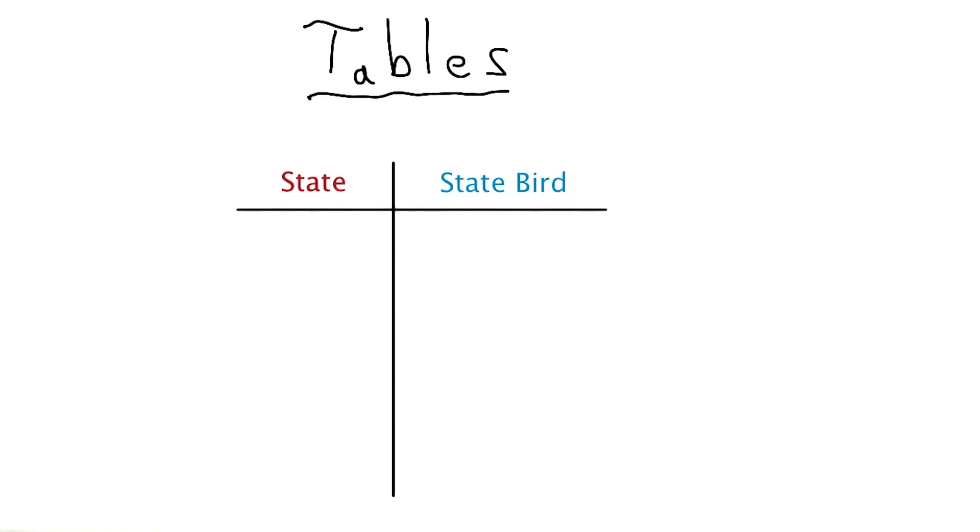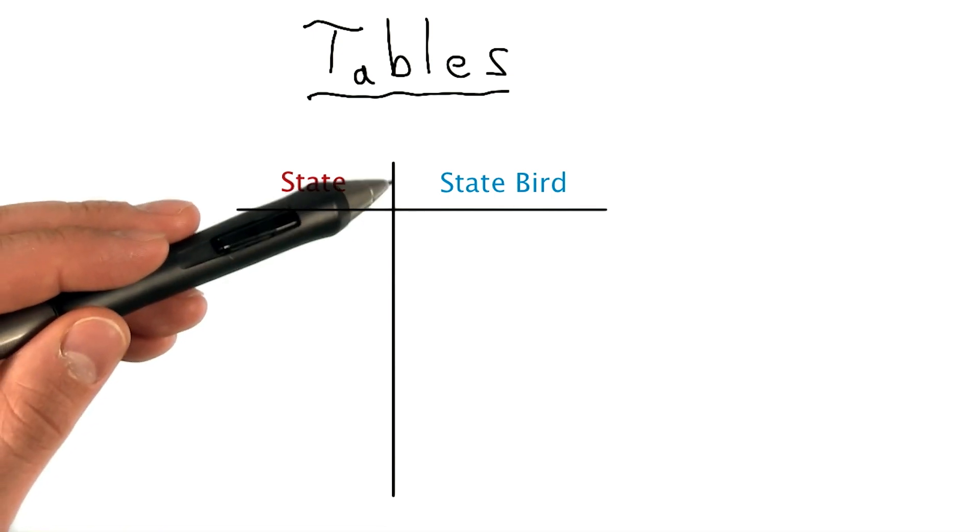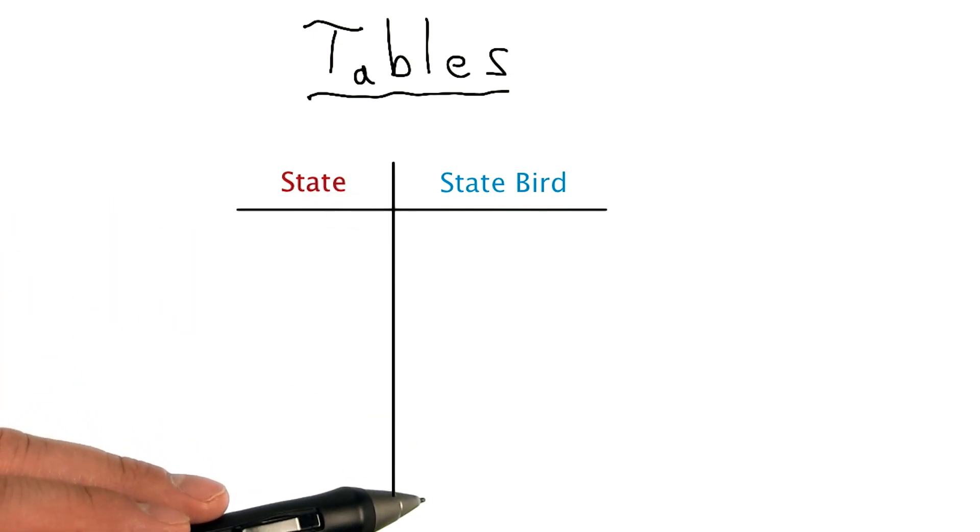In this example, we'll be looking at states and their corresponding state bird. Since states do have some geographical representation, we may want to represent them on a map. But since state bird is simply a label or category, it may be hard to represent in one of the other visual encodings that correspond with the geographic map.